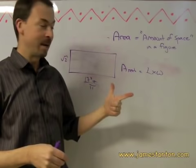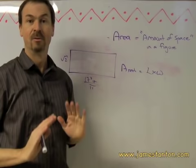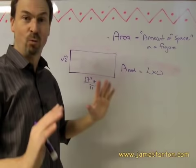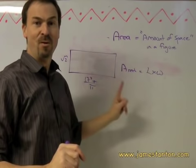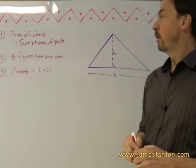Conservation of area number one, congruent figures have the same area number two, and number three, areas of rectangles are going to be declared to be length times width no matter what. And believe it or not, those three basic principles are essentially it to define a really good theory of area, enough at least for high school geometry. Let me explain what I mean. Let me derive for you the formula for the area of a triangle based on those three ideas and nothing more.